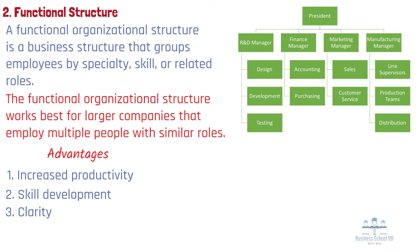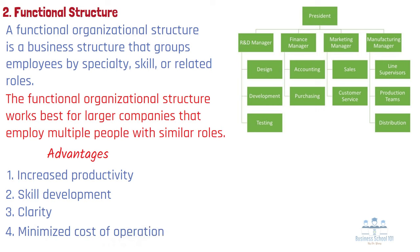3. Clarity: when companies bring people of the same specialty together, it creates an environment of clarity. Anytime someone within the company needs high-level information related to marketing, human resources, customer service, or operations, they know where to go. 4. Minimized cost of operation: by organizing employees according to business functions, departments can reduce the chance for multiple departments to complete similar work. Giving tasks to individuals with the right skills also saves money because work gets performed more efficiently.